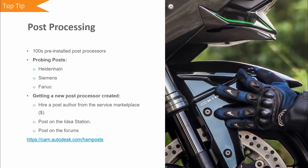Fusion comes pre-installed with hundreds of post processors for many common machine controllers, and many more can be downloaded for free from the Fusion post processor website. Only a couple of posts are already configured for probing — Heidenhain, Siemens, and FANUC. There are several ways to get new posts created or existing posts edited: you can hire a post author from the services marketplace, post on the Autodesk ideas station, or post on the forums. The Fusion community is very active and all post processors are open source, so you can collaborate to edit and customize them. The website to download posts is cam.autodesk.com/hsmposts, and you can also download pre-created tooling libraries from various tooling and probe suppliers.